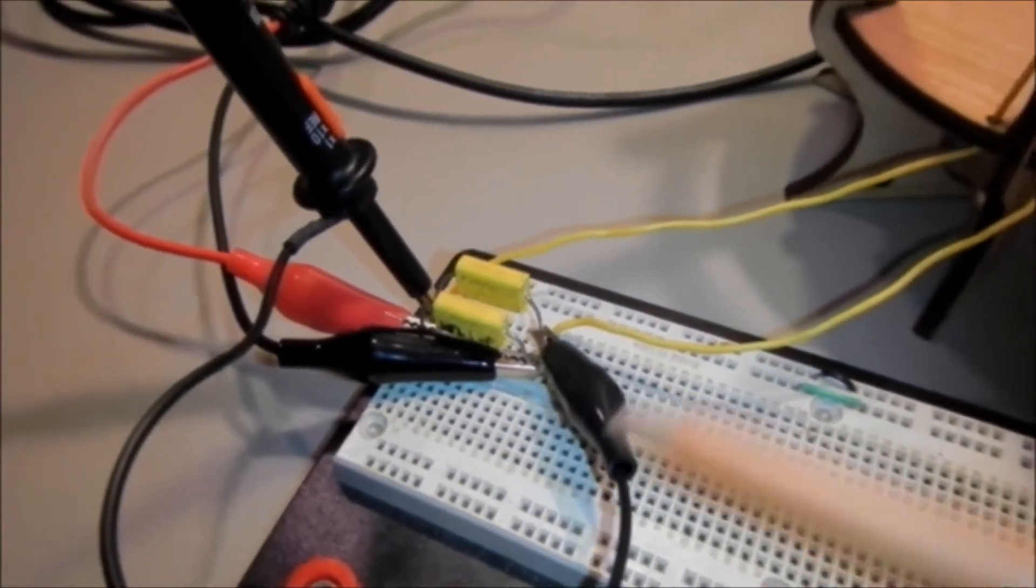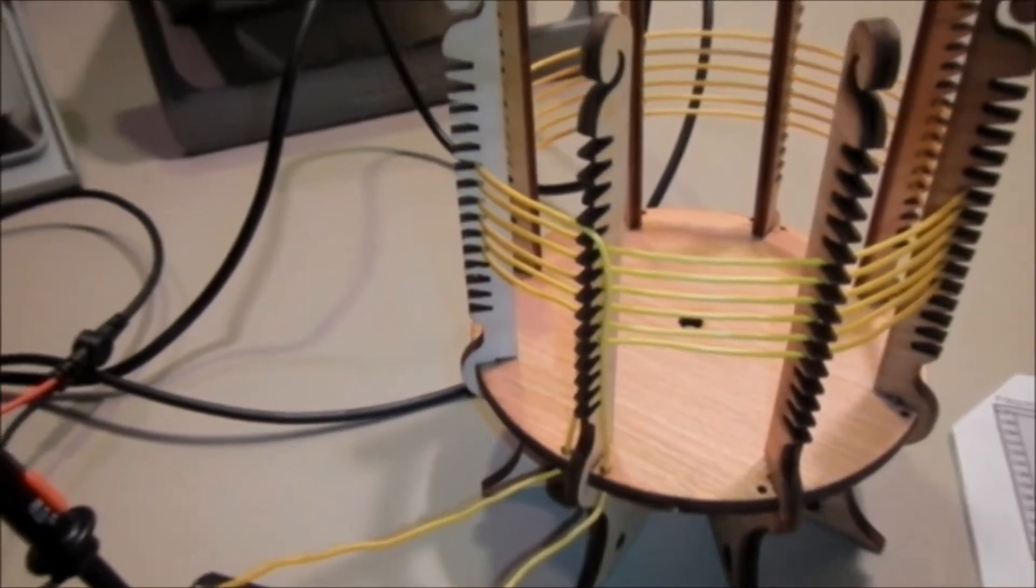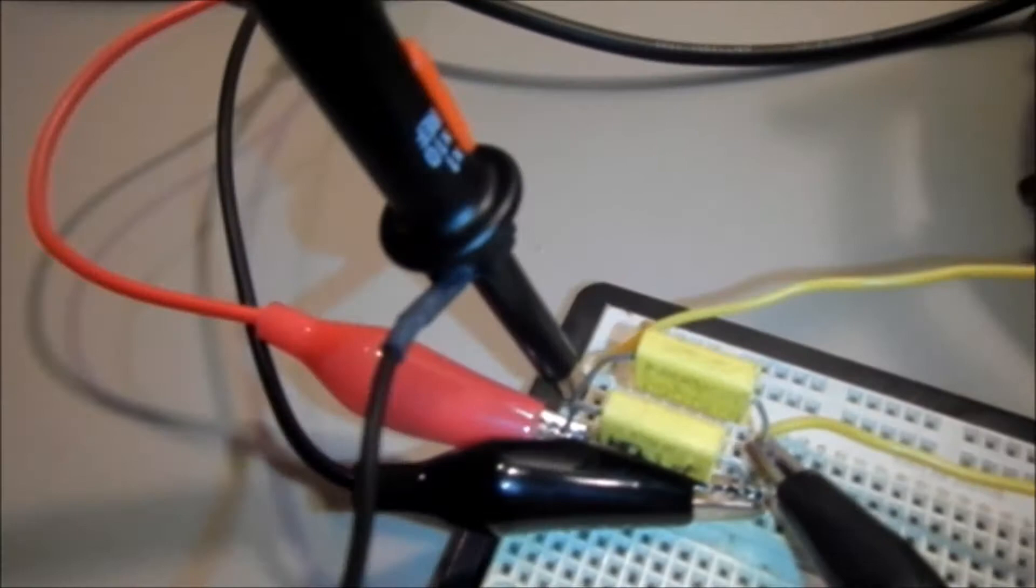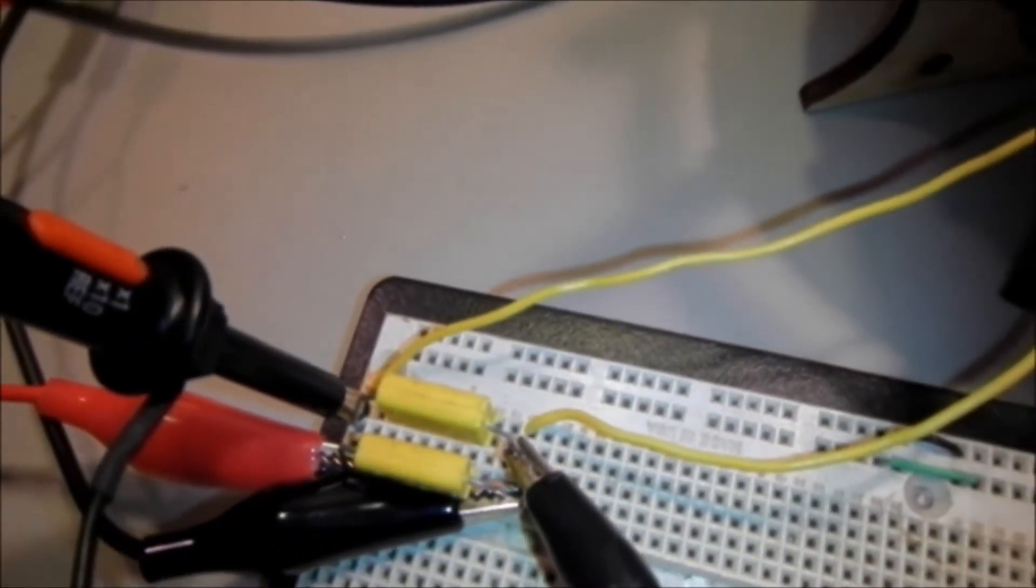And this is 20 nanofarads, two 10 nanofarad capacitors in parallel, and a 7.4 microhenry inductor primary coil. And what we're doing is we've hooked the oscilloscope and the function generator across the capacitor and inductor.